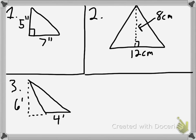Okay. Number one. It's 5 times 7 divided by 2. And that gives us 17.5 inches squared.